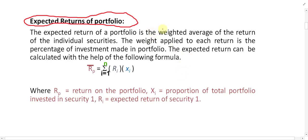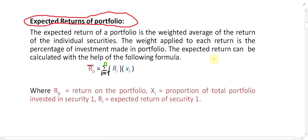The expected return of the portfolio is equal to the weighted average of return of each security. For example, you made a portfolio of four securities: security A, security B, security C, and security D. To calculate the expected return, first calculate the return of each individual security — for example, A is 10%, B is 20%, C is 30%, and D is 40%.